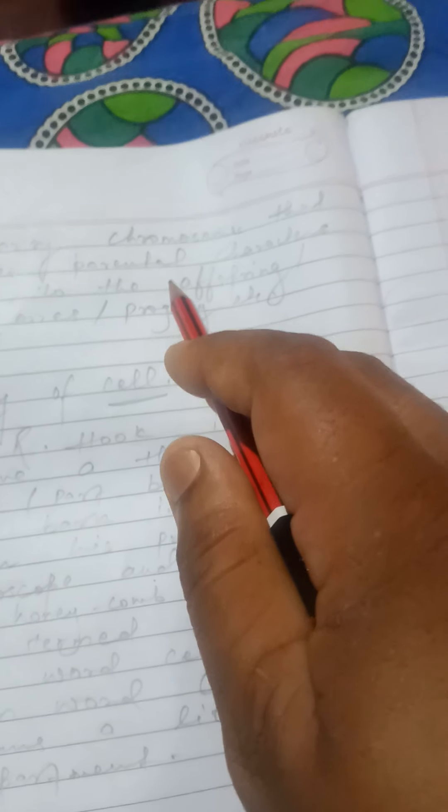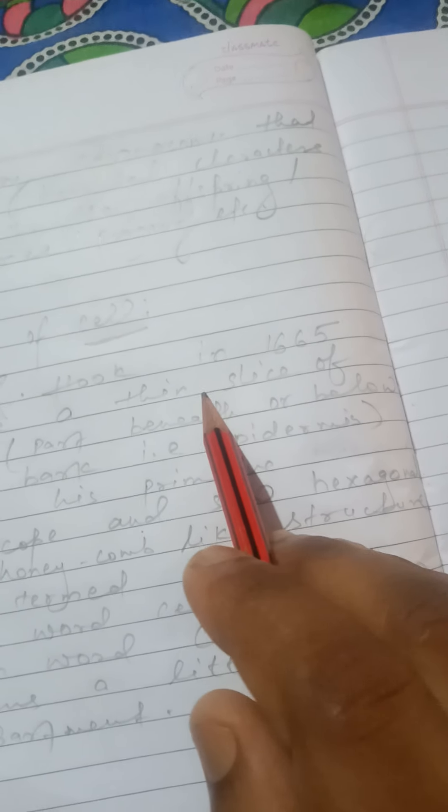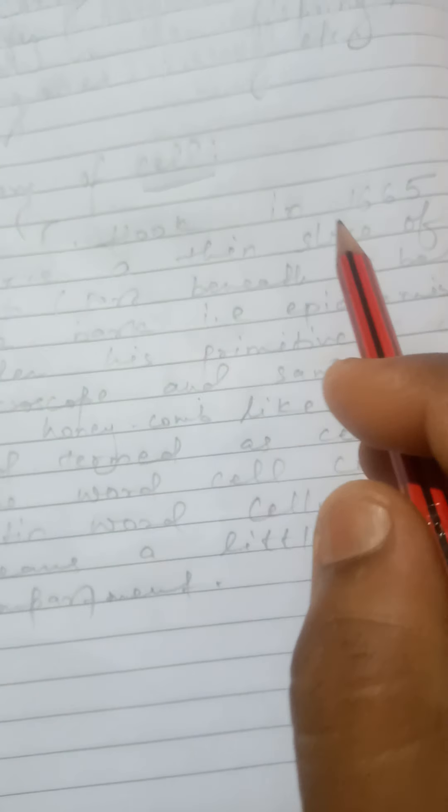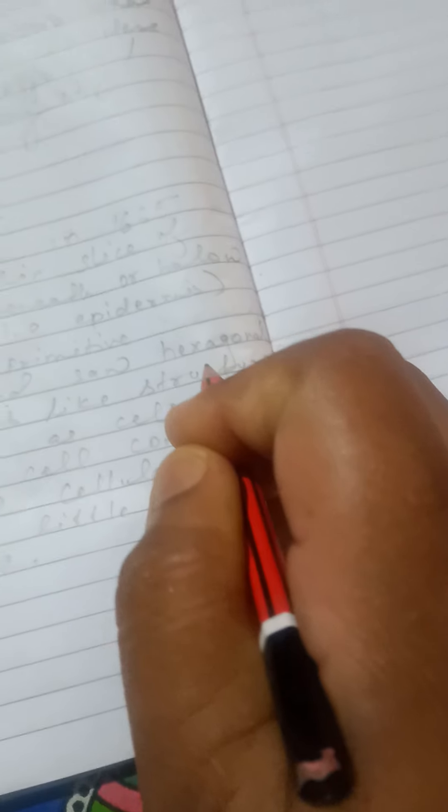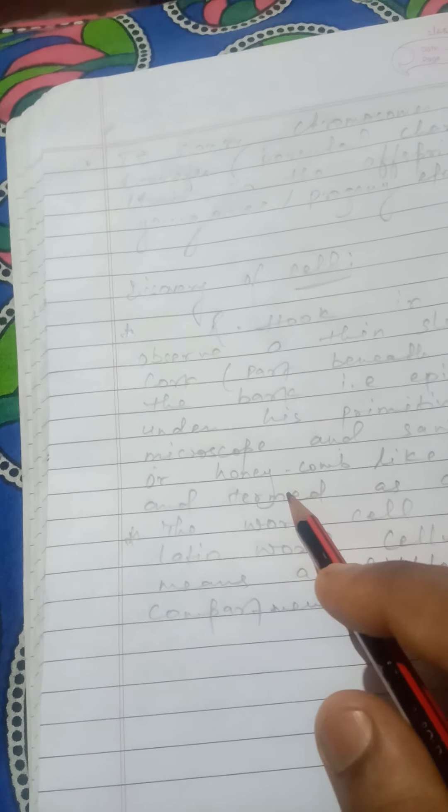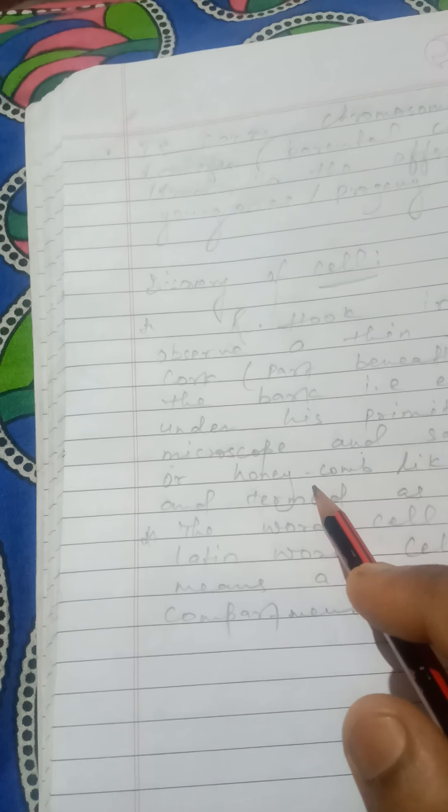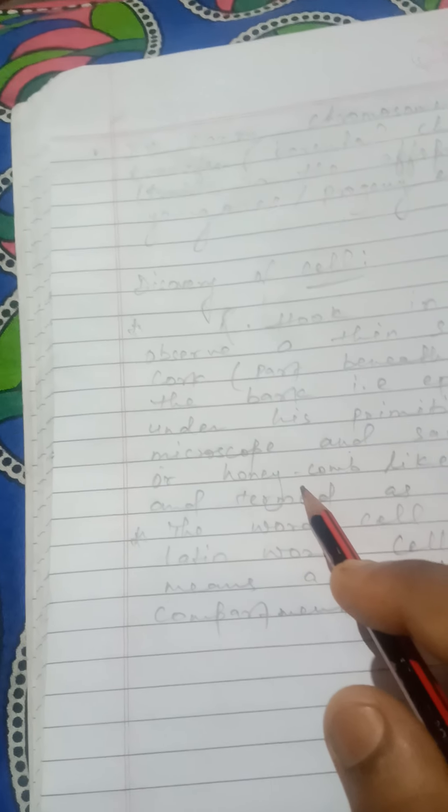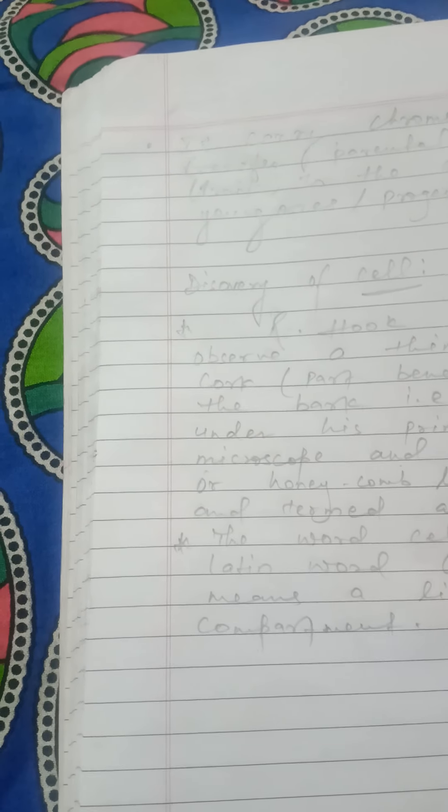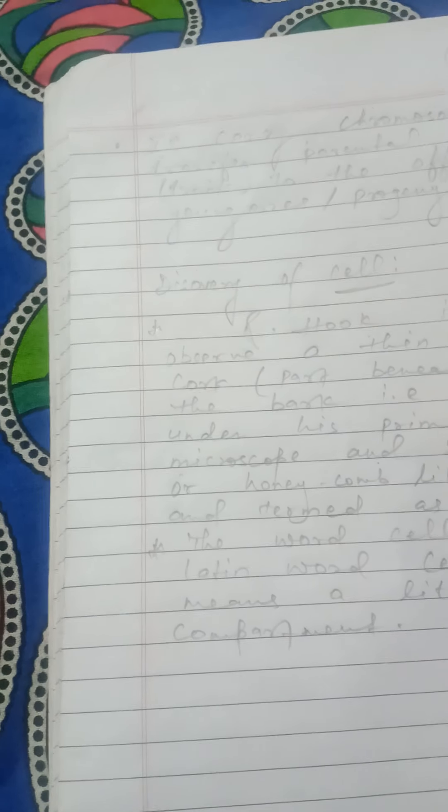Now let's talk about the discovery of the cell. As you all know, Robert Hooke in 1665 observed a thin slice of cork under his primitive microscope and saw a hexagonal structure. Hexagonal means there are six line segments, or a honeycomb-like structure, like the hives where honey bees live. Who observed this? Robert Hooke, in 1665. What part did he observe? A thin slice of cork. Cork is the part present below the epidermis, which is the bark.